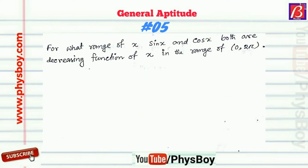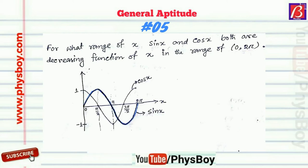The next question is: for what range of X are both sine X and cos X decreasing functions of X, in the range 0 to 2π? The graph of sine X and cos X over the period 2π is shown. The range of X for which both sine X and cos X are decreasing functions of X is π/2 to π.